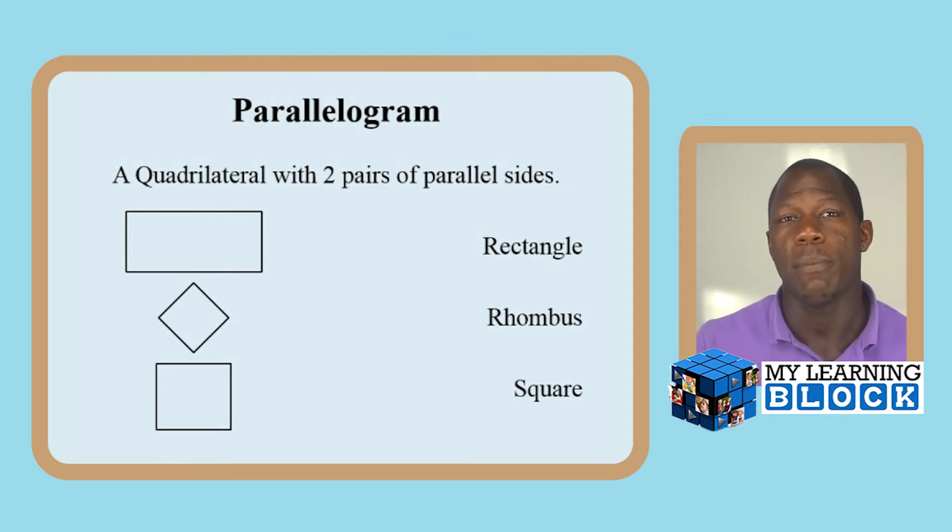All three of these objects have two pairs of parallel sides, and that's pretty much the definition of a parallelogram. So if someone ever asks your child to classify a rectangle, square, rhombus, they should know that those are all parallelograms first, then they can be a rectangle. But not all parallelograms are a square, or not all parallelograms are a rectangle or rhombus.